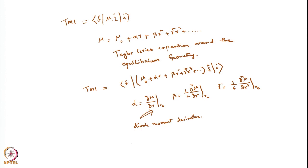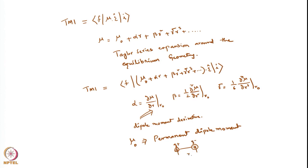μ₀ is called the permanent dipole moment — the dipole moment when the molecule is at equilibrium geometry. For example, if you have a molecule AB with a partial charge q⁺ on A and q⁻ on B, separated by distance r₀ at equilibrium, then μ₀ = q × r₀.